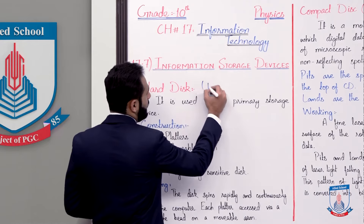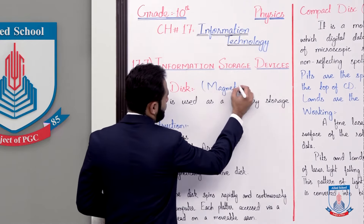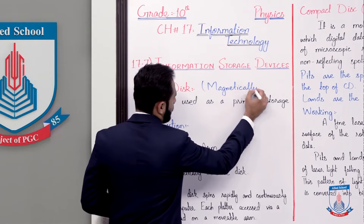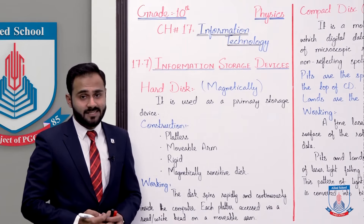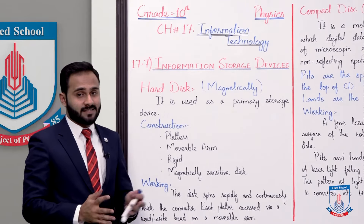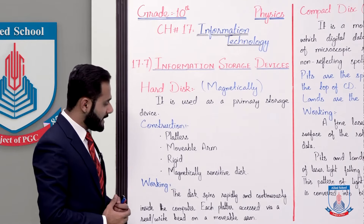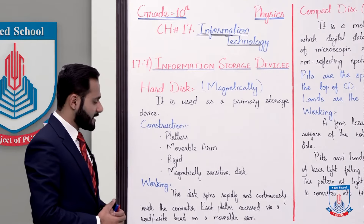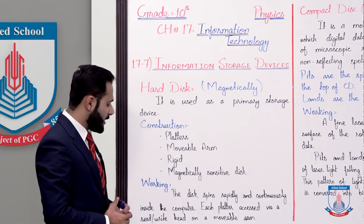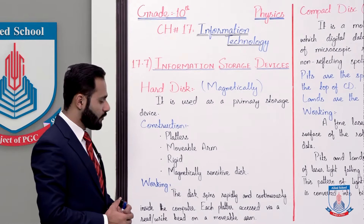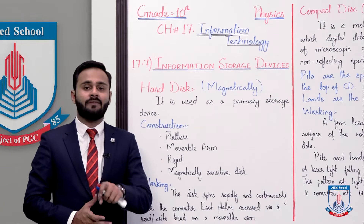Agar hum iski working discuss karein ki hard disk me data kis tarhaan se store kiya jata hai — the disk spins rapidly and continuously inside the computer, and each platter is assisted via a read/write head on a movable arm. So ye jo disk hai ye computer ke andar spin karti hai.